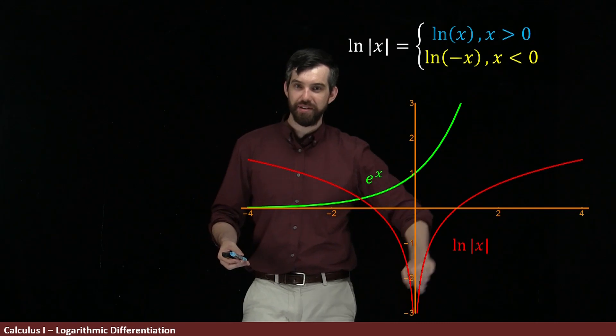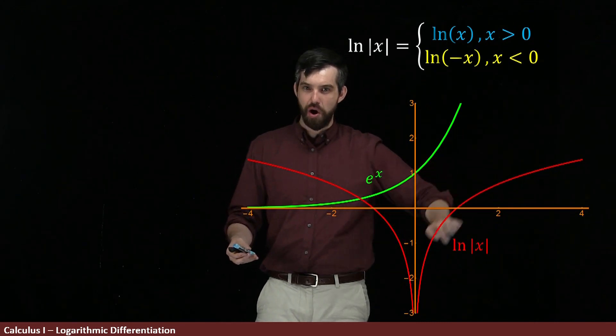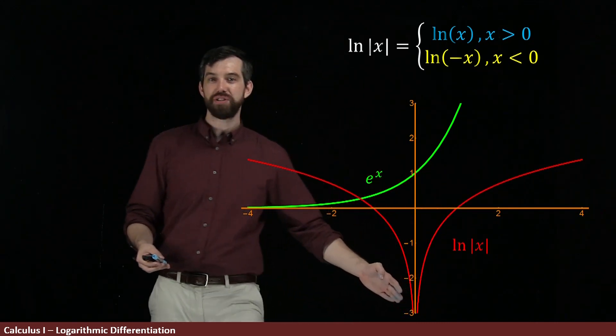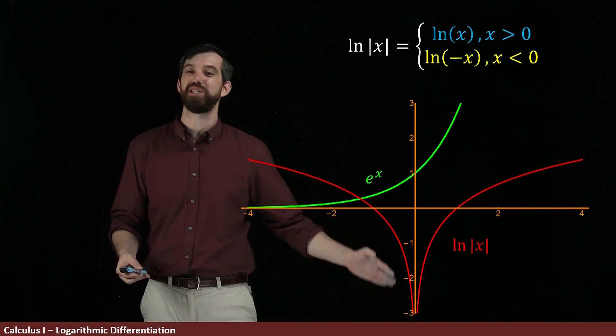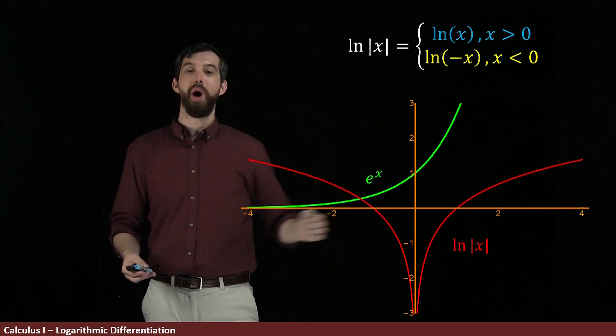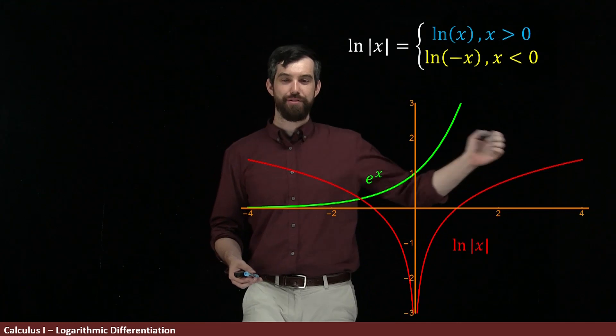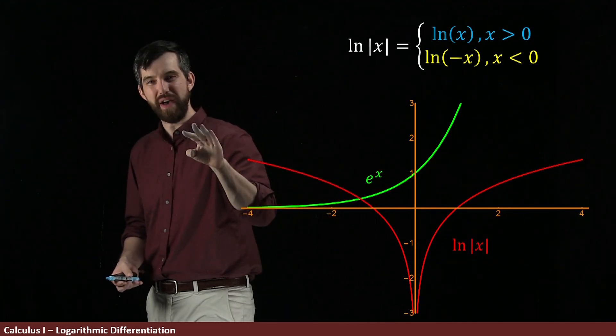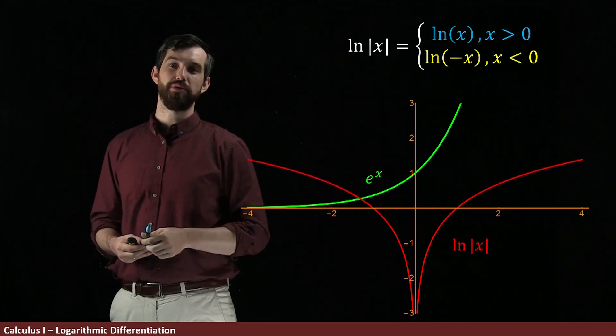And then graphically, we have down here, this was the original natural log of x. And then the other side of it, when x is less than 0, this is just this mirror image over to the y-axis. So this is the graph of the natural logarithm of absolute value of x and its domain is every value except x equal to 0.